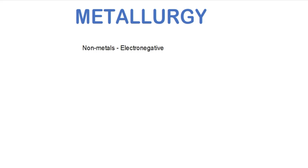On the other hand, non-metals are electronegative — that is, they have the tendency to add electrons and hence become negatively charged ions. Thus, electropositive metallic elements can combine with electronegative non-metals to form compounds. In nature, the metallic elements are found with certain non-metals in the form of their compounds.